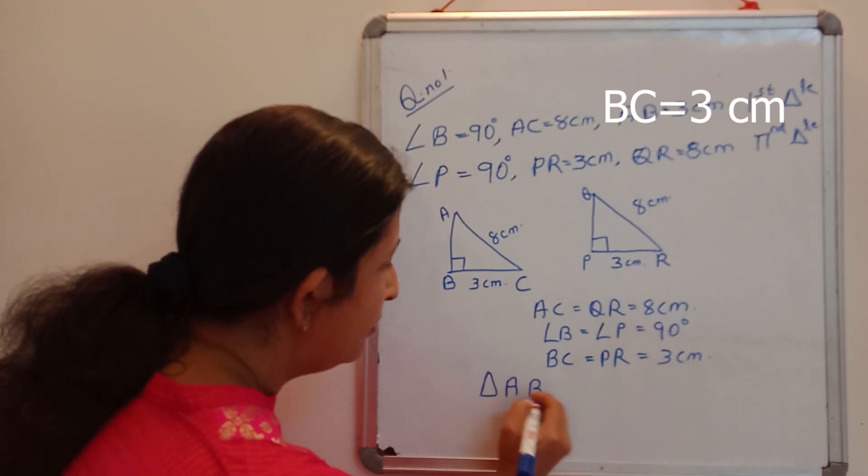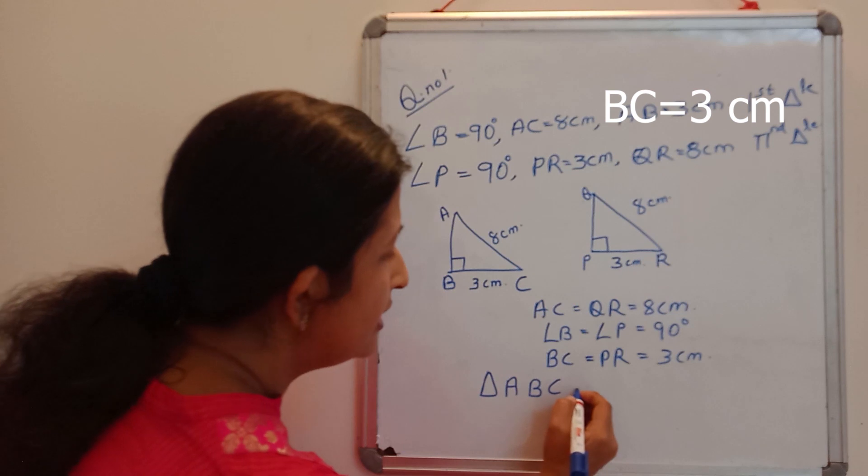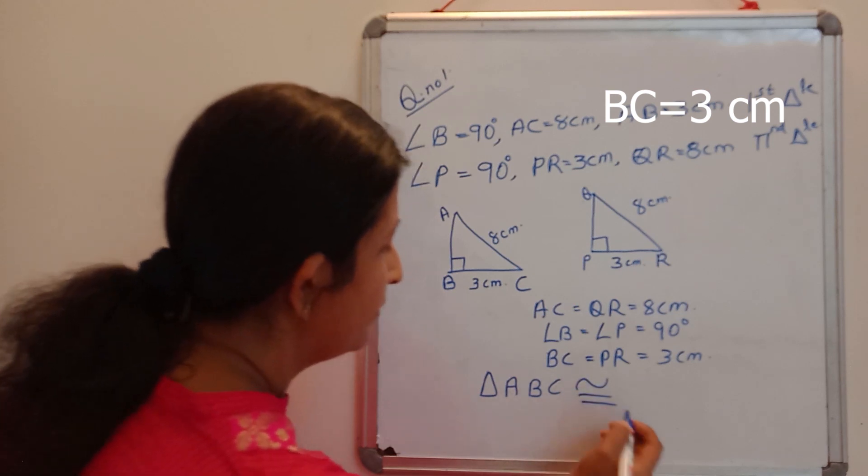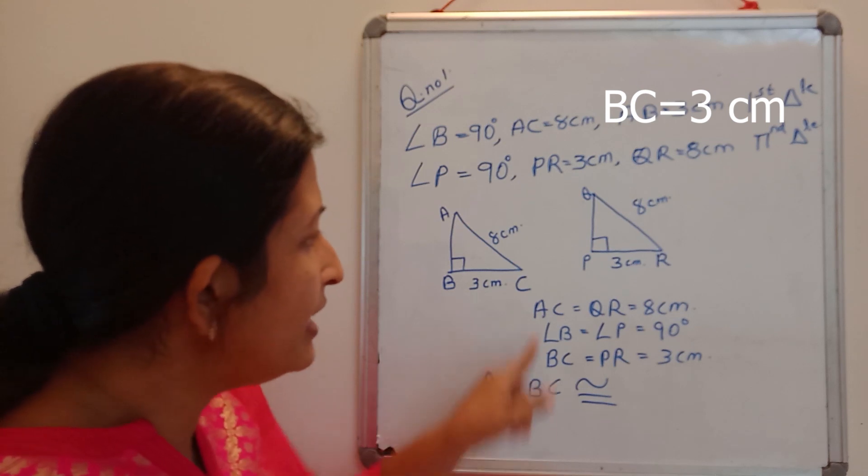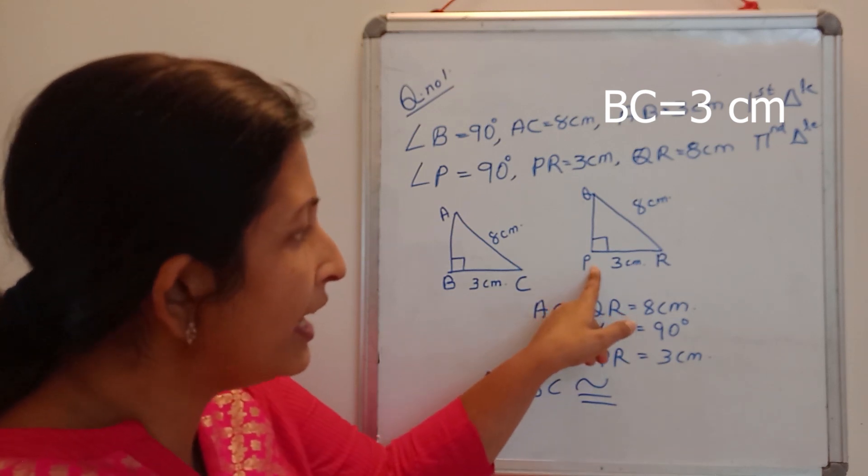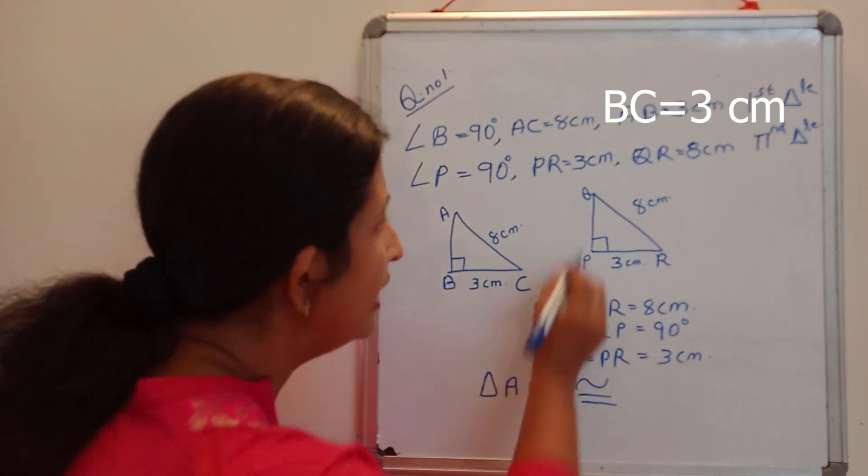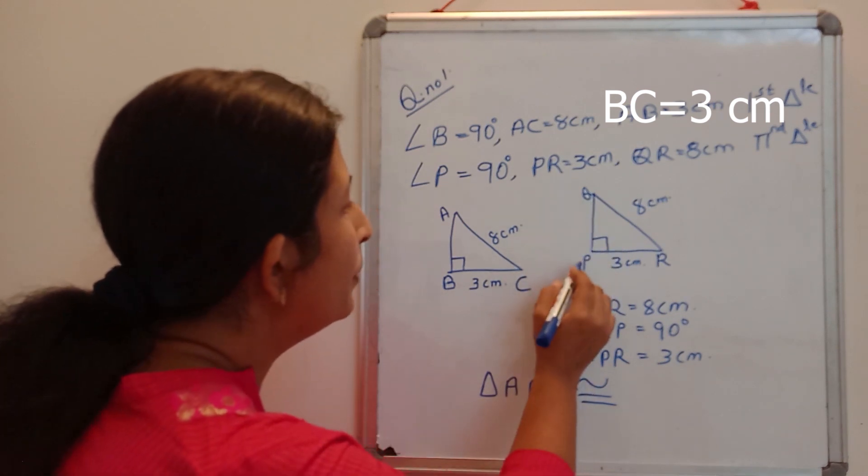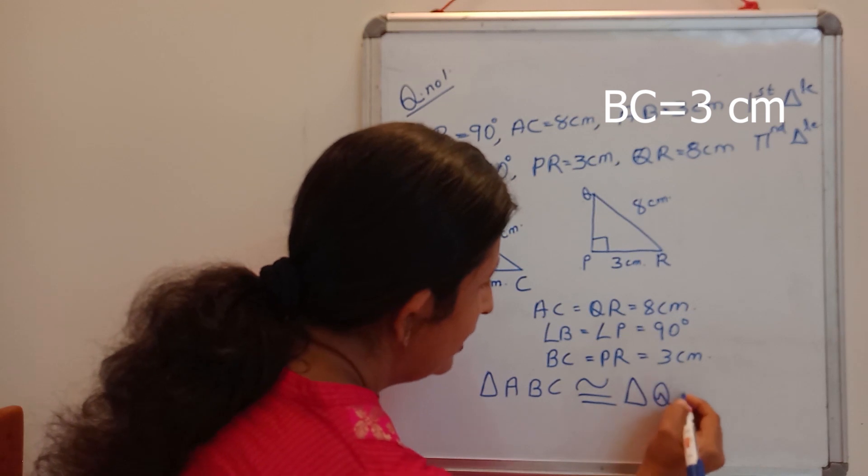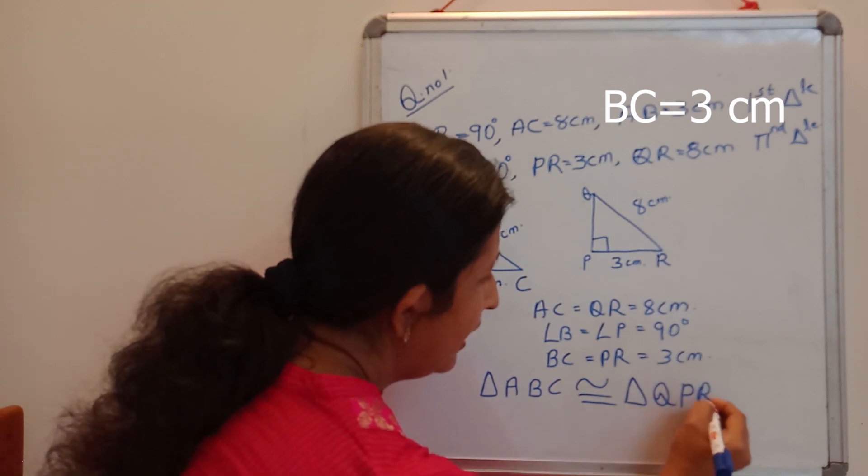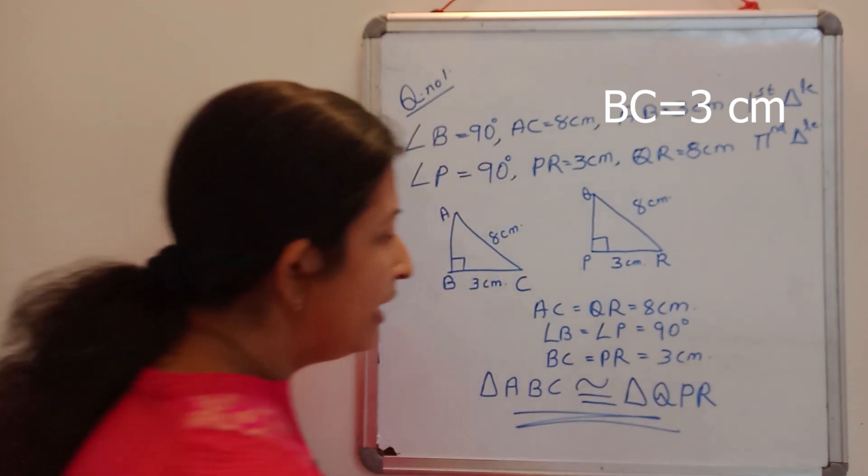So we can say that ABC triangle ABC is congruent to, B should be the right angle and here P is the right angle, and it should come in the middle, so QPR triangle QPR. Now we got two congruent triangles by using RHS criteria.